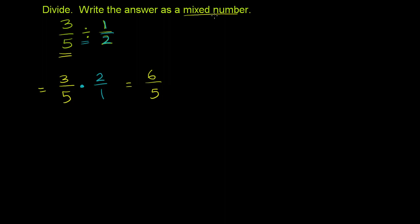Now they want us to write it as a mixed number. So we divide the 5 into 6, figure out how many times it goes. That'll be the whole number part of the mixed number, and then whatever's left over will be the remaining numerator over 5. So what we'll do is take 5 into 6. 5 goes into 6 one time. 1 times 5 is 5. Subtract, you have a remainder of 1.